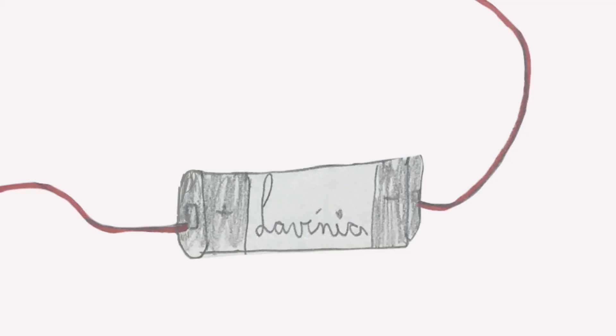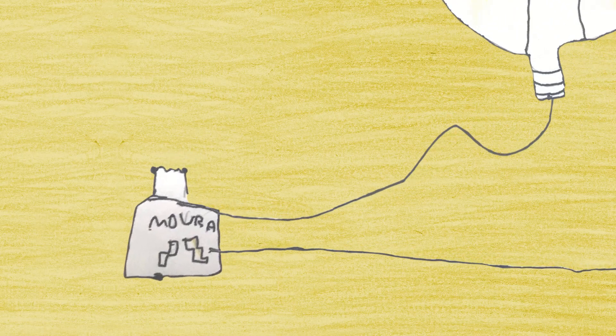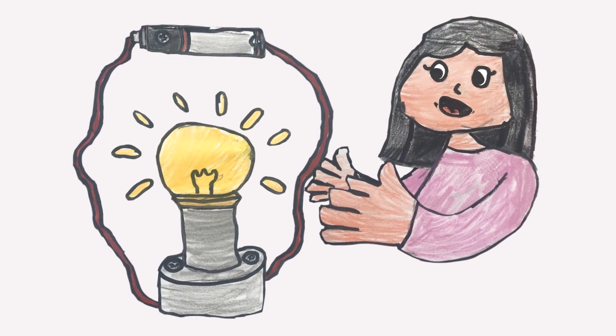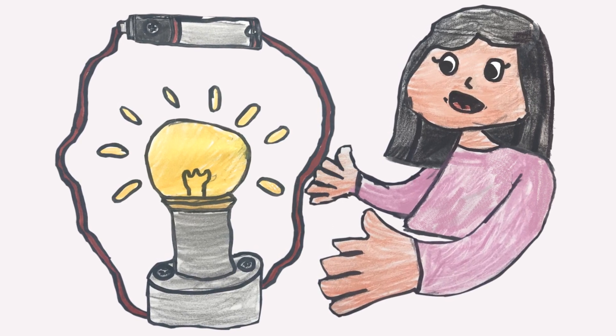A cell or a battery can be used as an energy source in a circuit. Many people use the word cell and battery to mean the same thing. But in science, we use the word battery to describe a group of cells connected together.